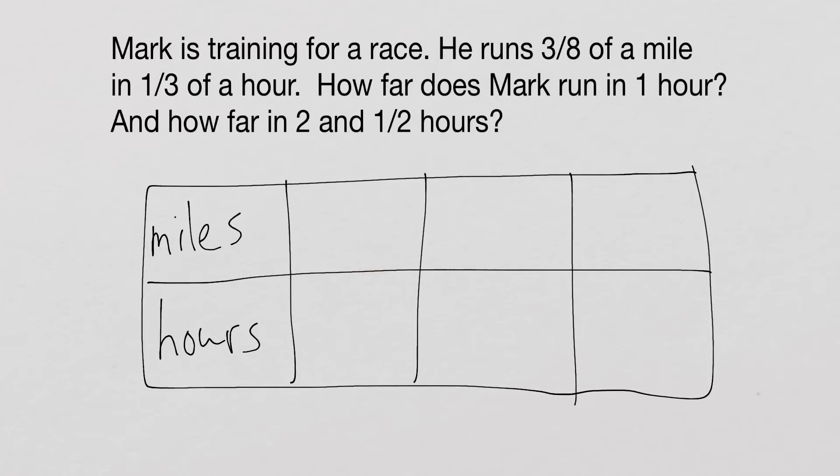The second column is always going to be information from the problem. So that's where we're going to put three-eighths of a mile and one-third of an hour.